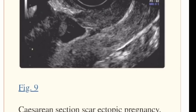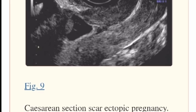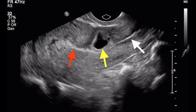4. Caesarean section scar ectopic pregnancy. Caesarean section scar ectopic pregnancy seems to be diagnosed more than ever. Ultrasound diagnosis is based upon an empty endometrial cavity, and the gestational sac is located in the lower anterior myometrium at the level of the previous caesarean scar. As with cervical pregnancies, the sliding sign is absent.